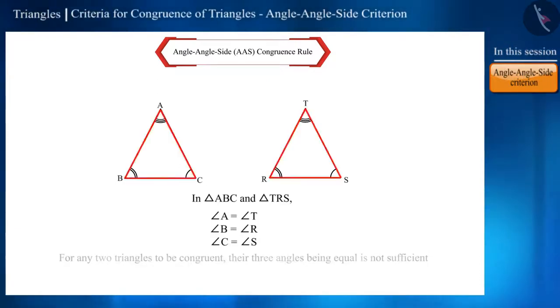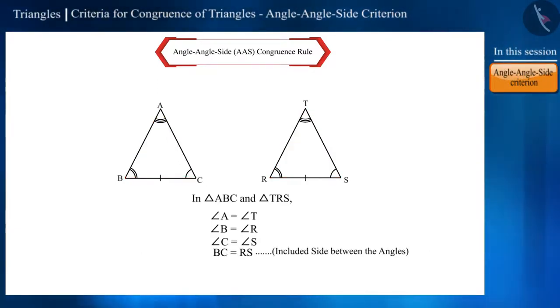But, if any one of their sides are equal, then the triangles made will be similar. Therefore, these triangles will be congruent according to the ASA congruent rule.